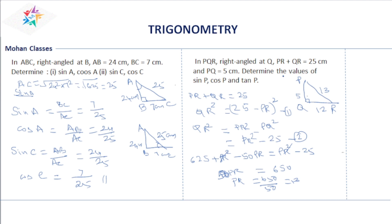Now we find sin P, cos P, and tan P. Sin P = QR/PR = 12/13. Cos P = adjacent/hypotenuse = PQ/PR = 5/13. Tan P = opposite/adjacent = 12/5.